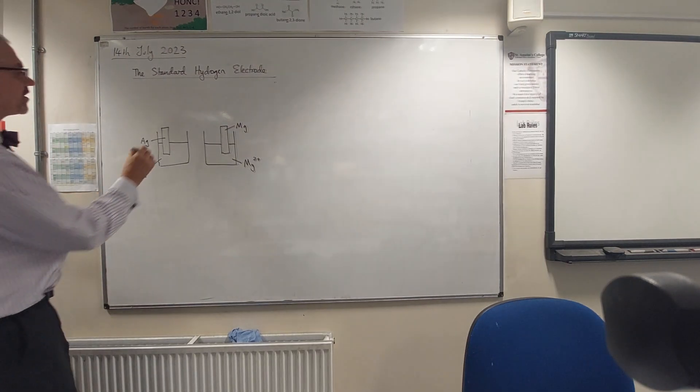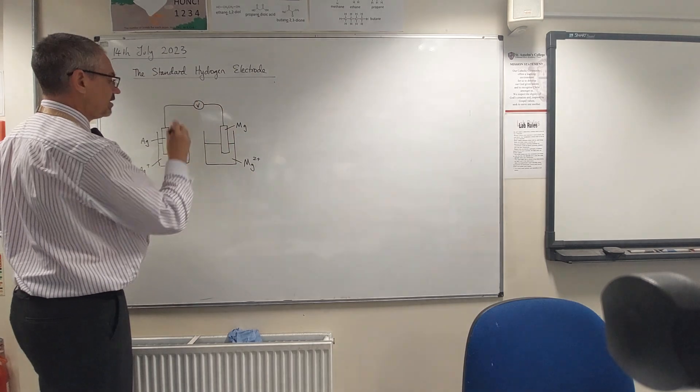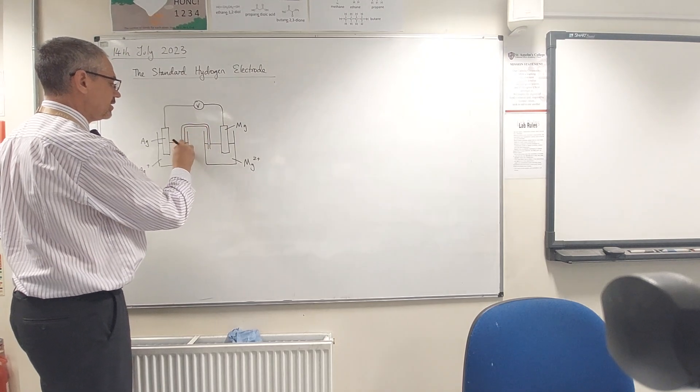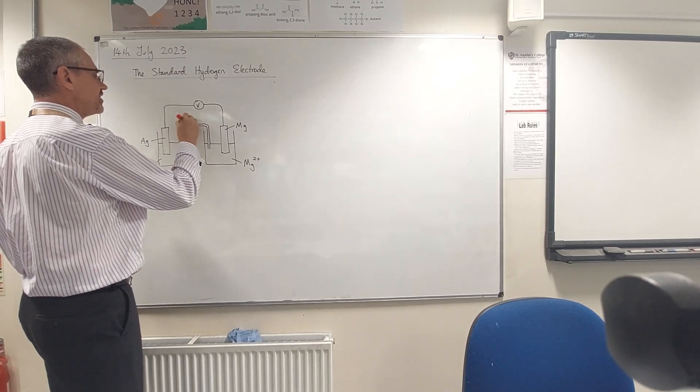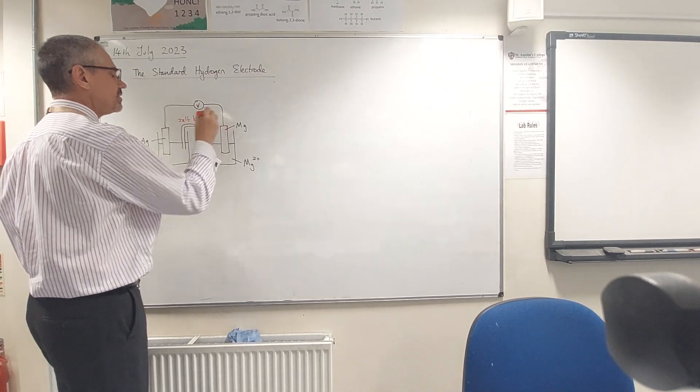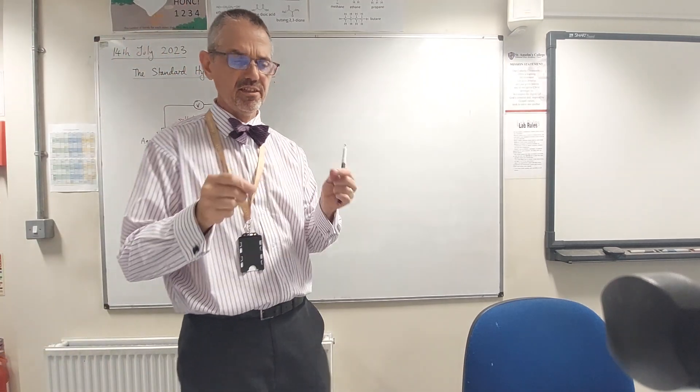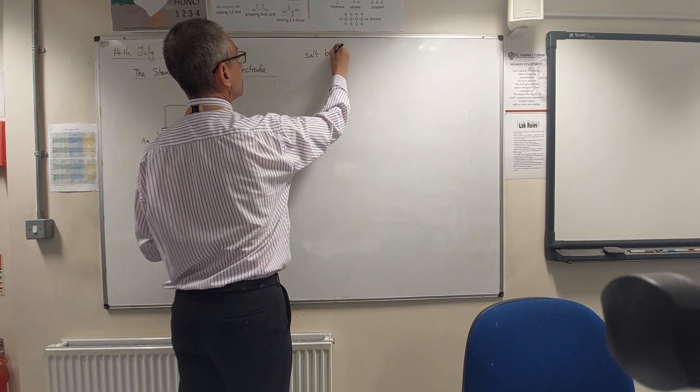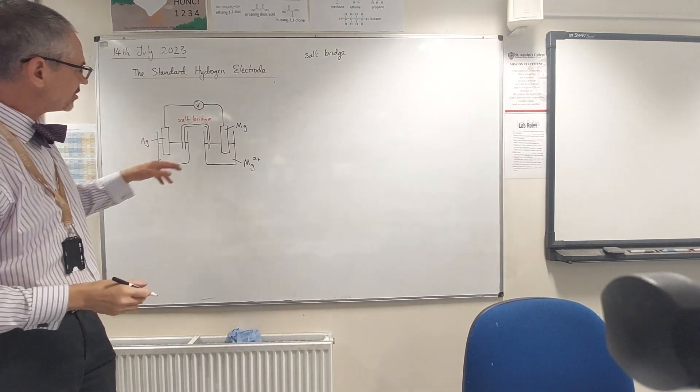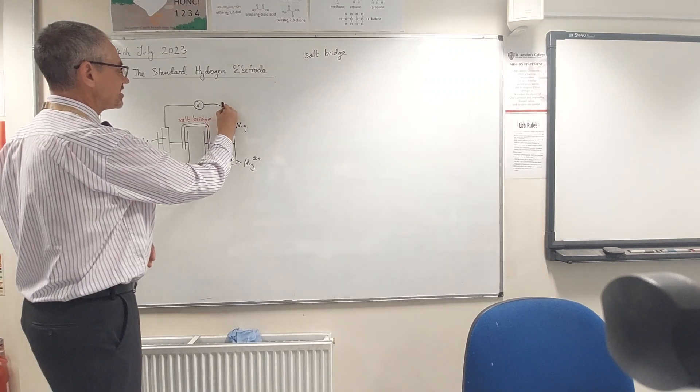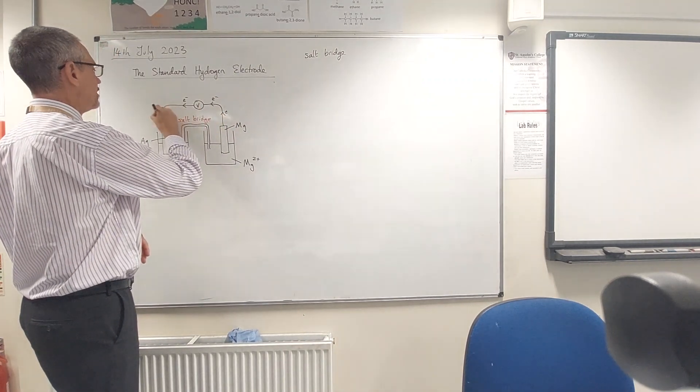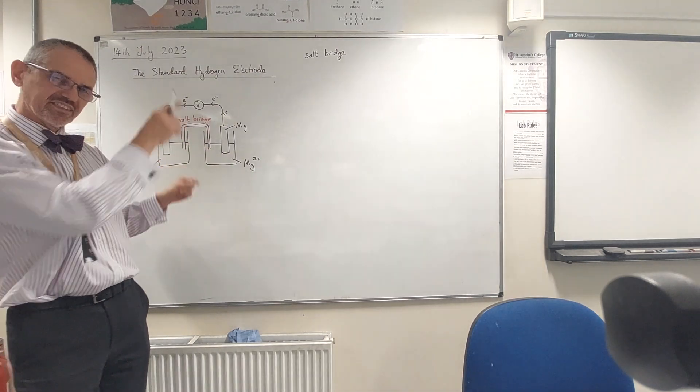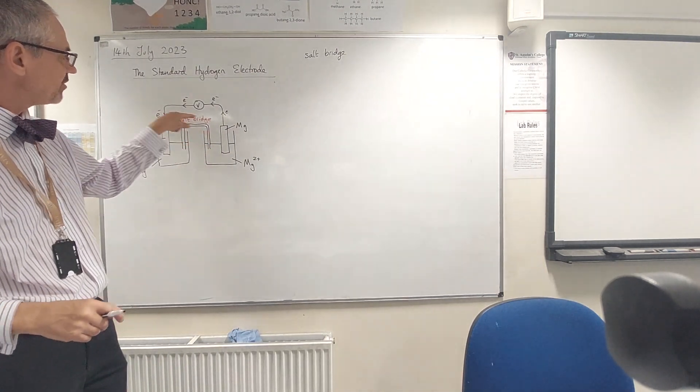If I connected that up to a voltmeter and make sure that I've got a salt bridge here - you might remember my salt bridge that I used in the last lessons, just a roll of filter paper soaked in both solutions so the ions can move around. As long as the ions are moving, we've got electrons. Which way are the electrons going? Magnesium is going to be giving away electrons, so they're going to be going this way. We need to equalize that charge to create a circuit.